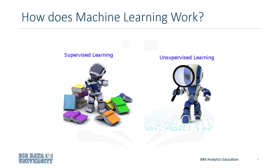Together, data is gathered to train a machine learning model so it can understand patterns within the data. Once the model has been trained, it can be used to predict the results of out-of-sample data, or data in which the results are unknown. Collectively, this is how machine learning is achieved.